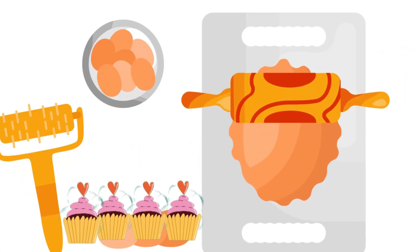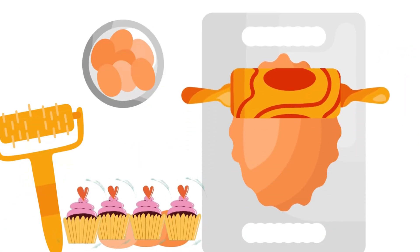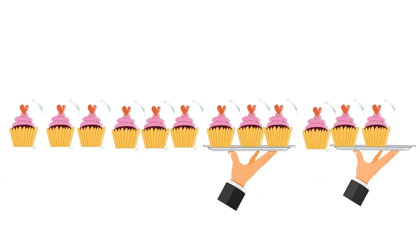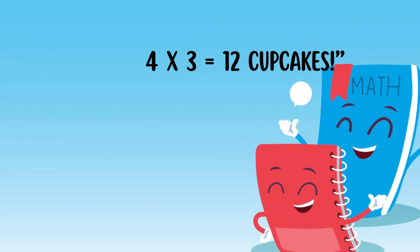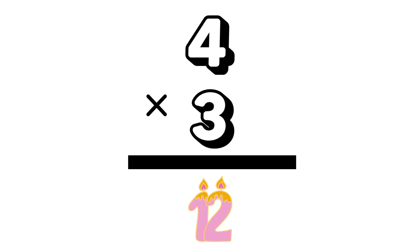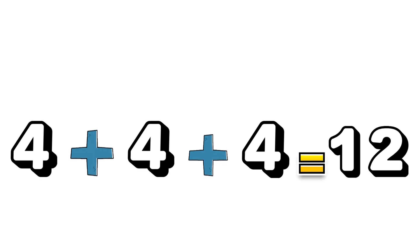We use multiplication every day. For example, if you bake four cupcakes and each tray has three, you'll have four times three, which equals twelve cupcakes. Four times three equals twelve. Or we can say four plus four plus four equals, you guessed it, twelve.